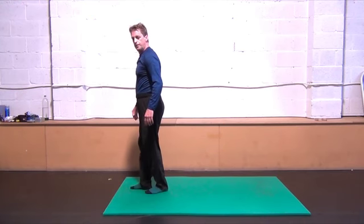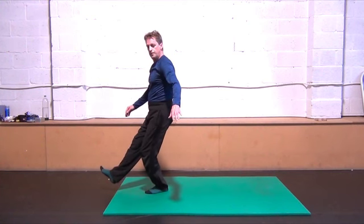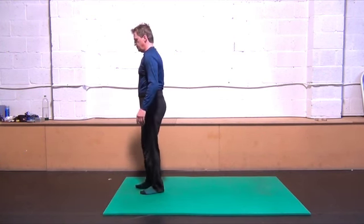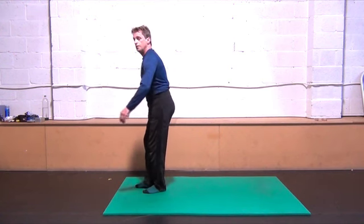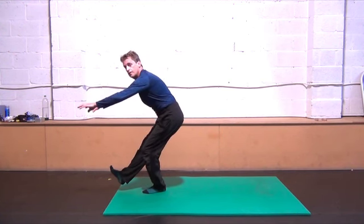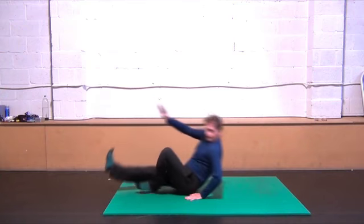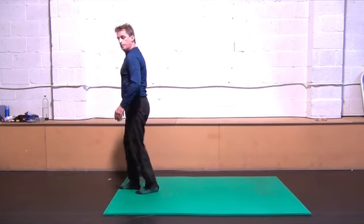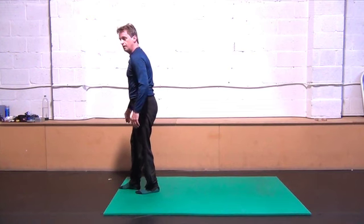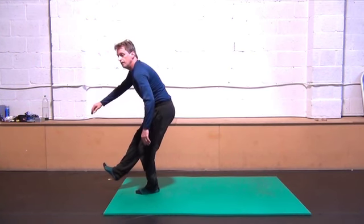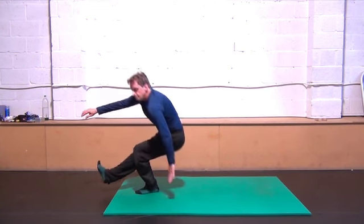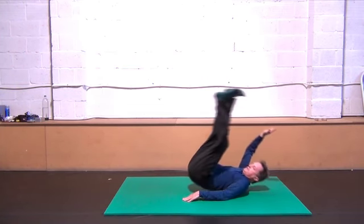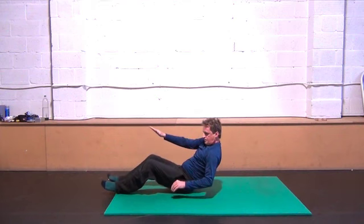When you first do the back fall, bend your knee as much as you can to lower yourself as close to the floor as possible before you drop down onto your butt. Here it is in slow motion. You step back, you lean your upper body forward, you bend at the knee to lower yourself towards the floor, reach back with your hand, land on your hand and then your butt, and roll out onto your back.